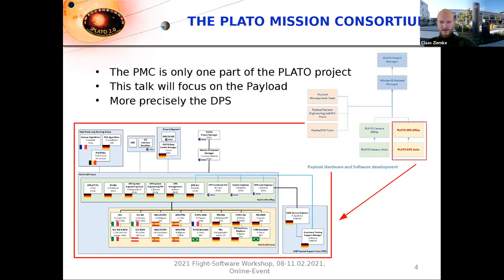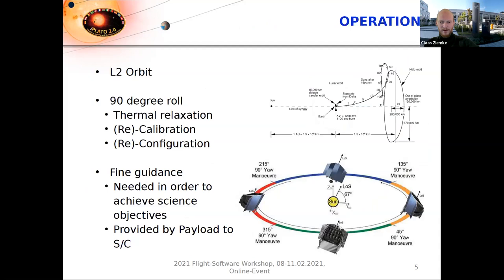The operations of the PLATO mission will be very similar to the Kepler mission. It will also be launched to a Lagrangian point 2 orbit, and similar to Kepler, every 90 days it will have to perform a 90-degree roll in order to keep alignment between the sunshade, the solar arrays, and the Sun. After that 90-degree roll, every time one day of thermal relaxation and recalibration is needed. Similar to Kepler, we have fine guidance sensors built into the payload, which will provide fine guidance data to the platform to improve the pointing accuracy of the spacecraft.